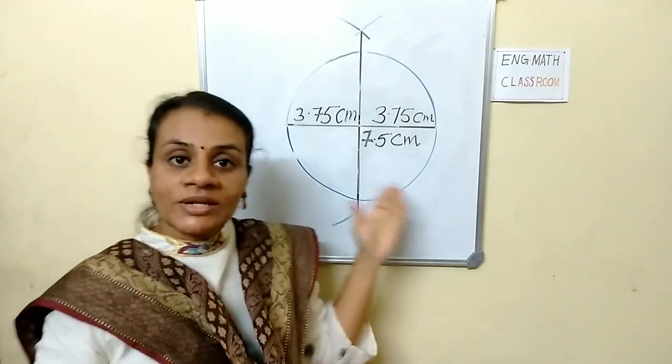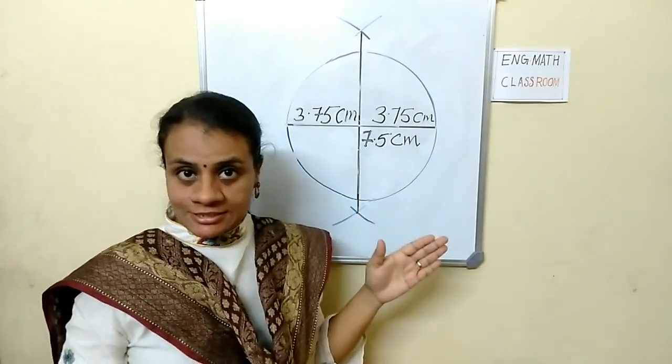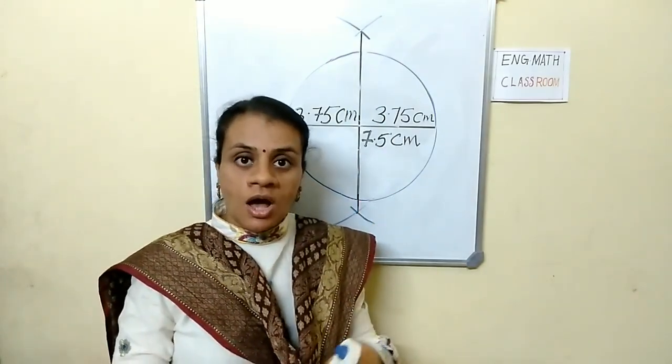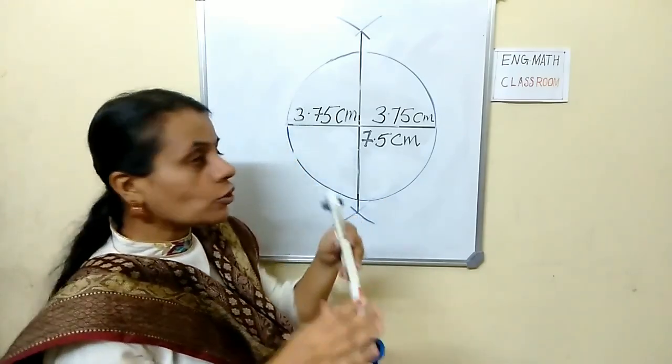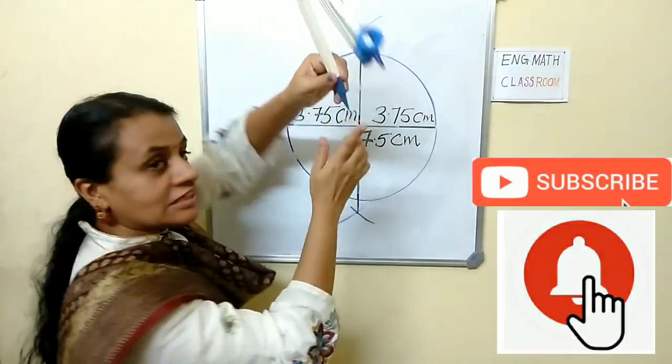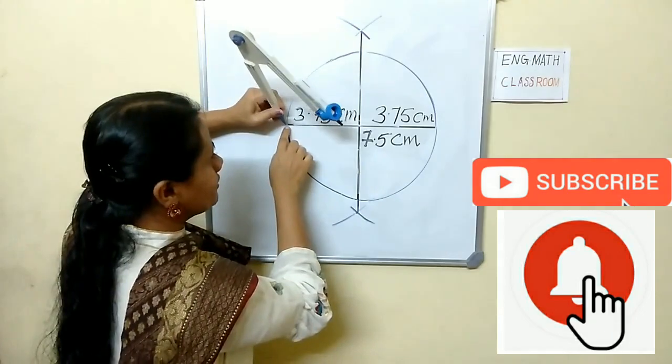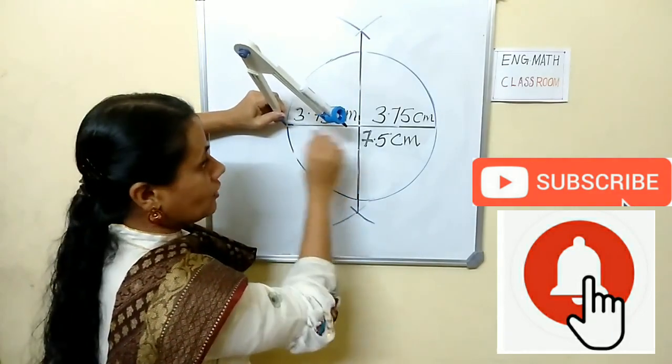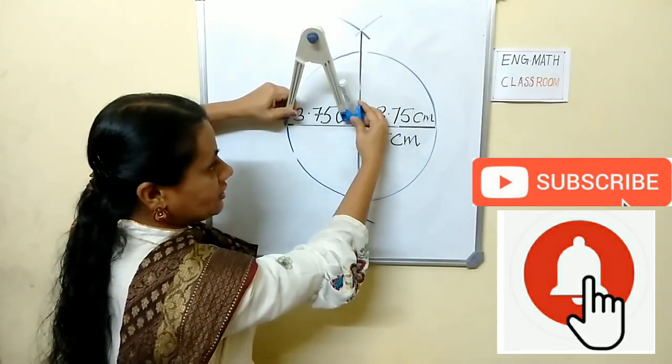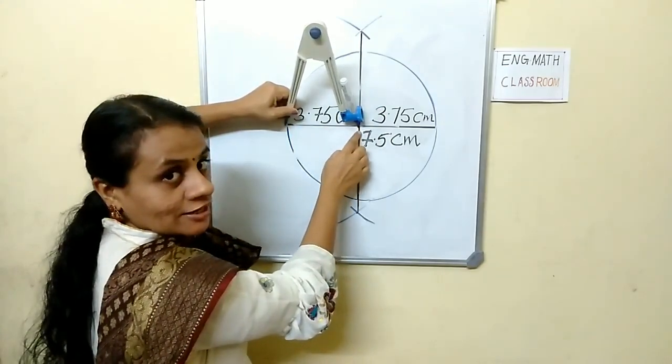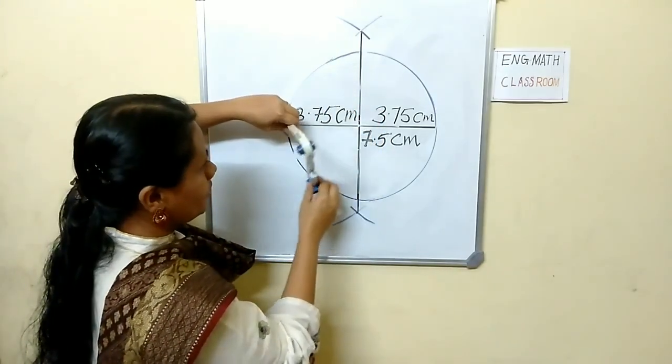You will get the figure like this. Also, another way to draw a circle: keep the needle of the compass at this point, and taking this length as radius you can draw a circle.